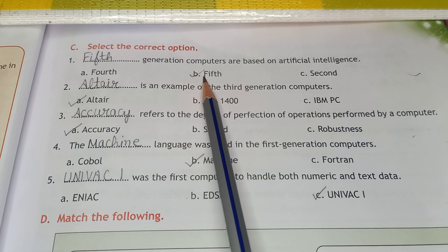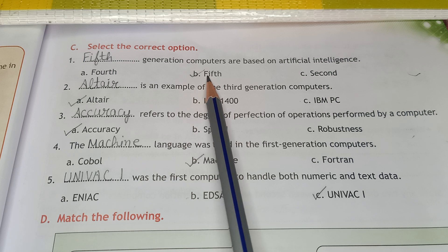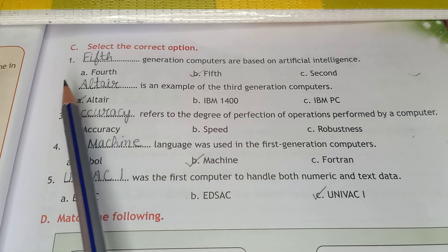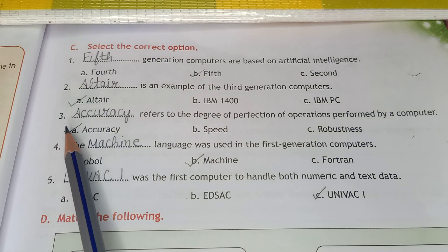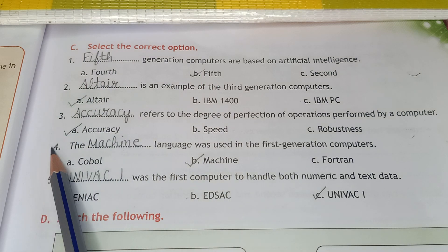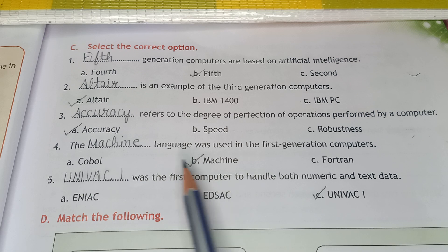For the next set of multiple choice answers: First, click on B — this is the correct option. Second, A. Third, A. Fourth, B. Fifth, C.